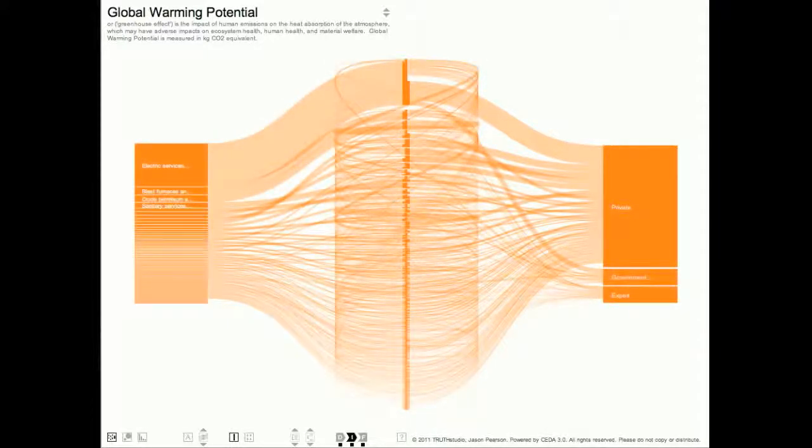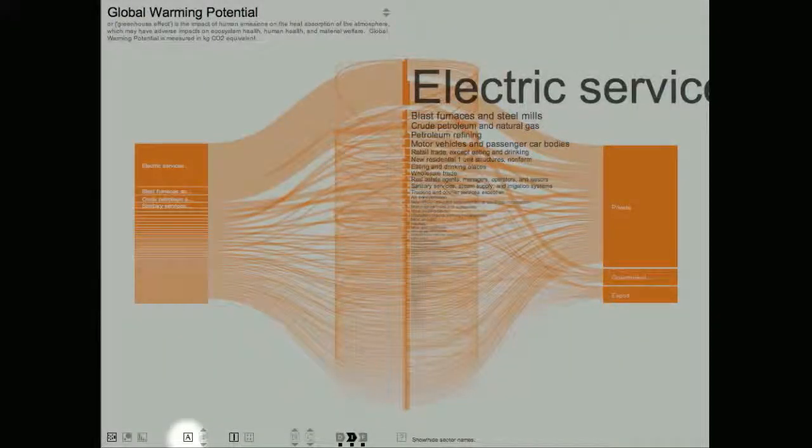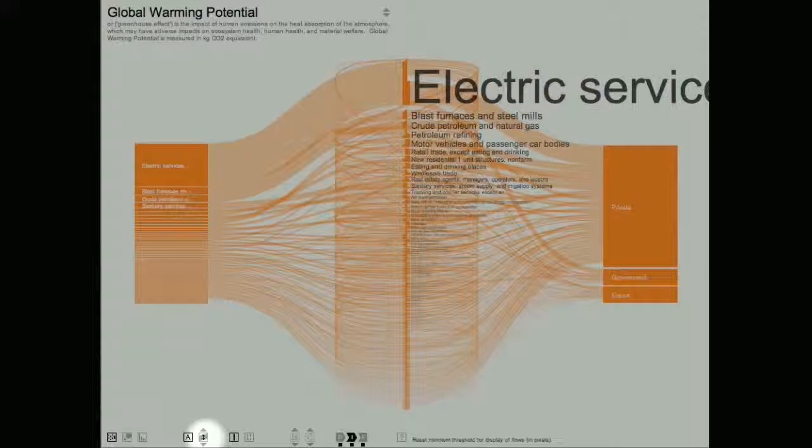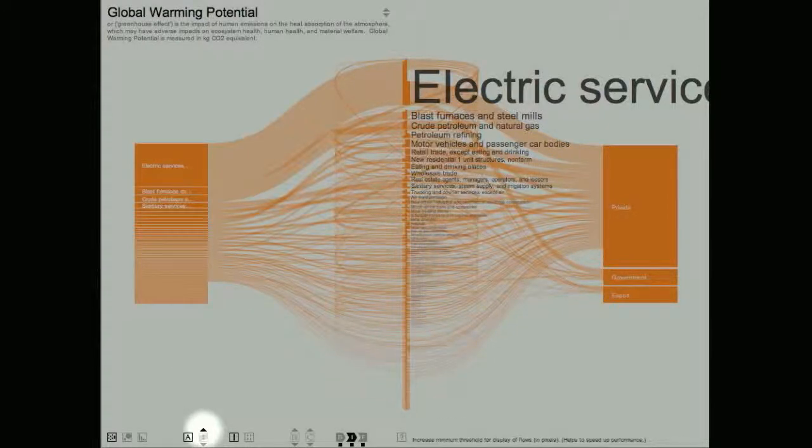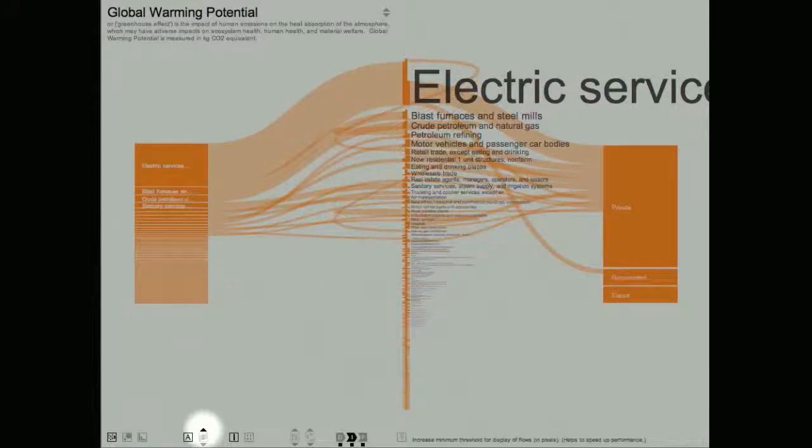The other buttons at the bottom of the screen allow me to customize the views for specific purposes. Looking at the other buttons in order from the left, the first button toggles whether or not the names of the sectors are displayed. The second button controls the minimum flow that will be displayed. If I raise the threshold by pressing the up arrow, I can limit my view to only the largest, most significant flows. This can also increase the speed of the display by reducing the load on the computer's processor.